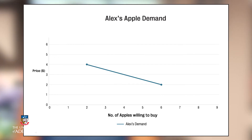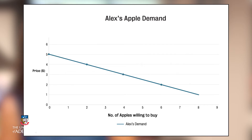On this line, you can map different prices of apples and determine how many Alex will be willing to purchase at each given price.